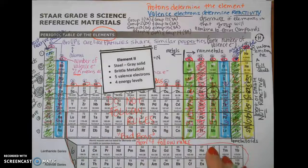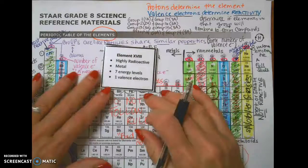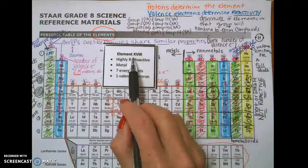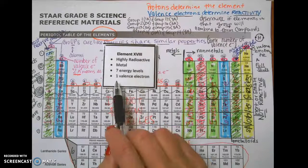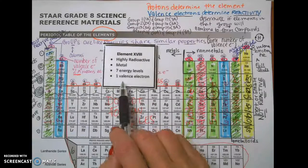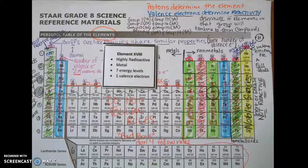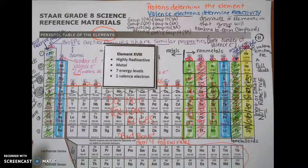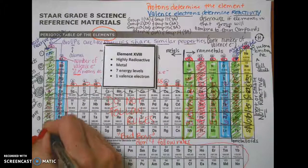Let's try another one. Element clue, Roman numeral 18. It says it's highly radioactive, it is a metal, it has seven energy levels and one valence electron. So we are looking for a most reactive metal with one valence electron. If we have seven energy levels, we're in period 7. If we have one valence electron, we are in group 1. So our answer is going to be francium.